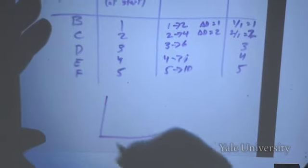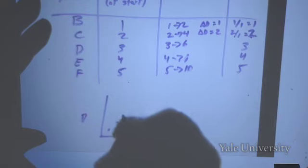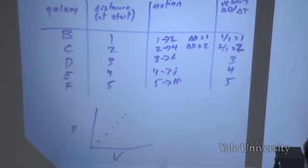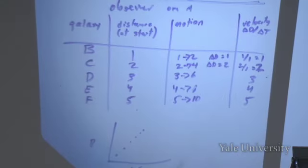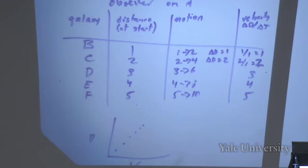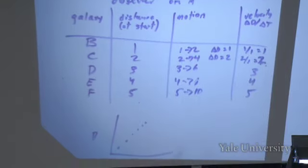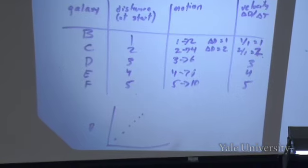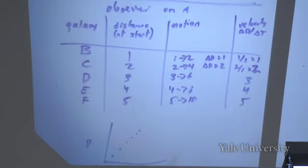Basically, if you take a set of points on a coordinate system and simply stretch the coordinate system, the further away something starts, the greater the stretch. So there is a correlation between how far away something starts and how fast it recedes from you.